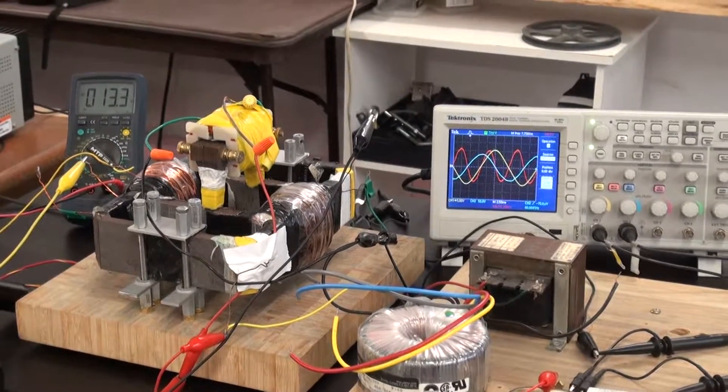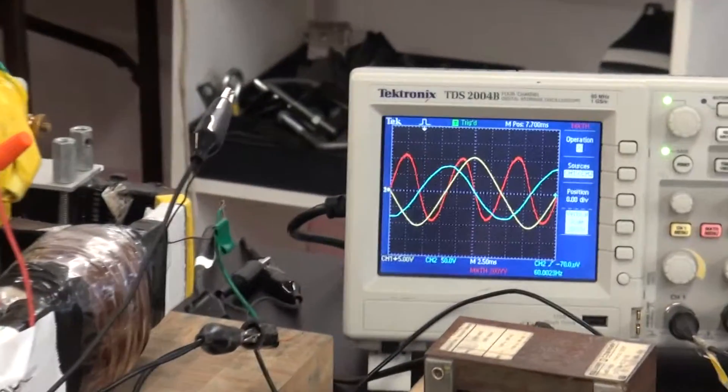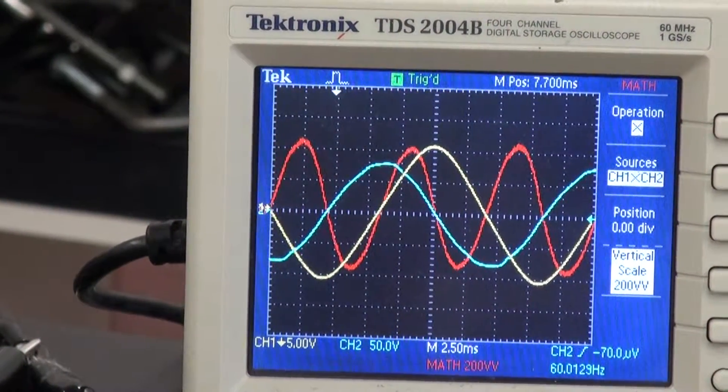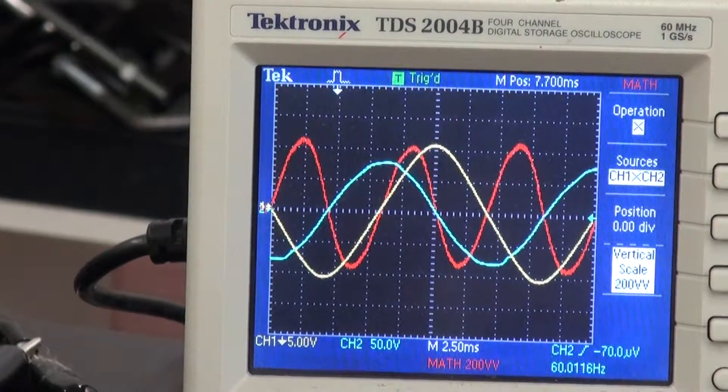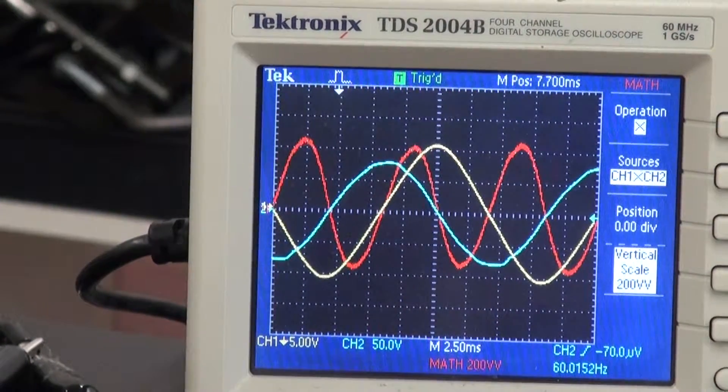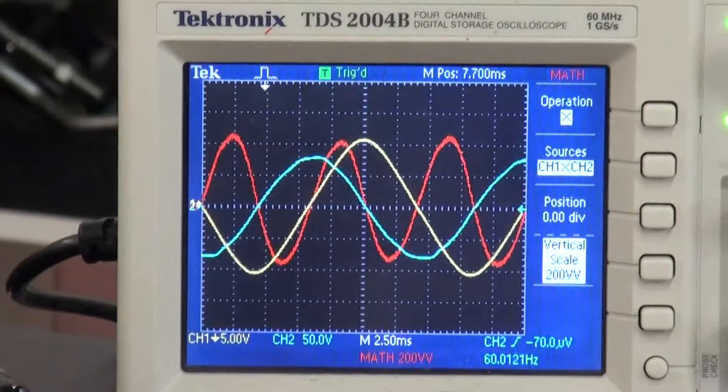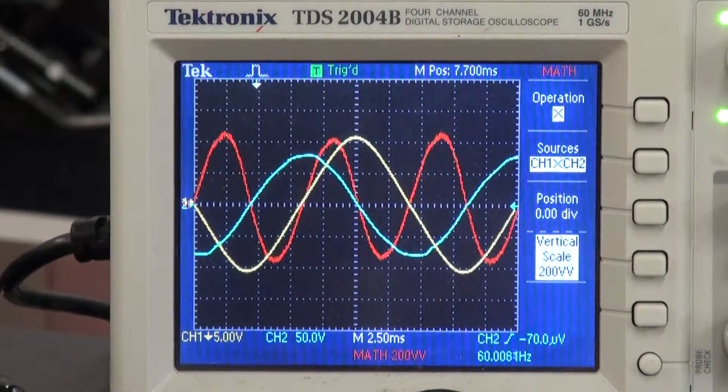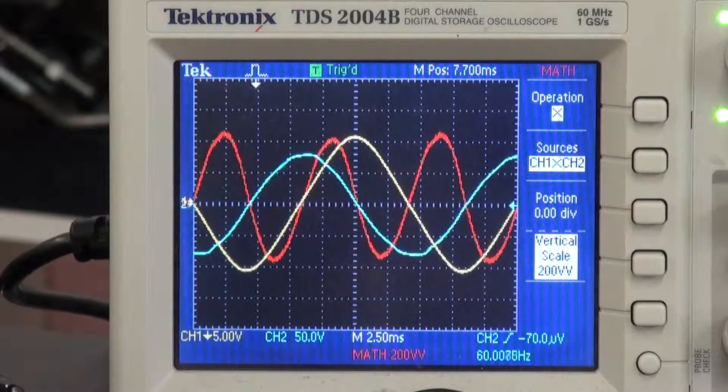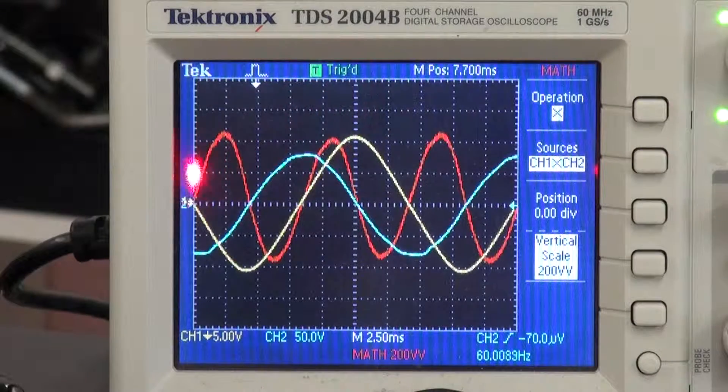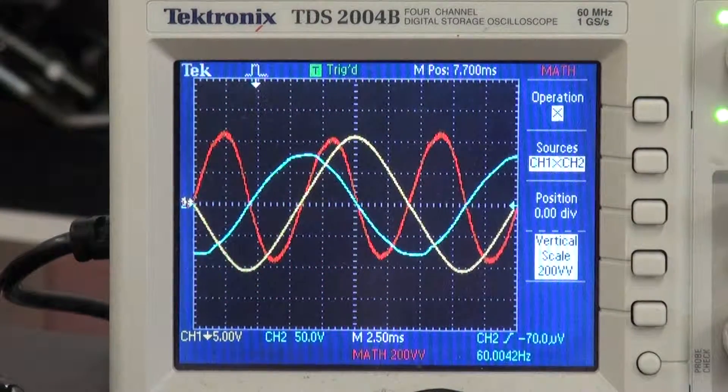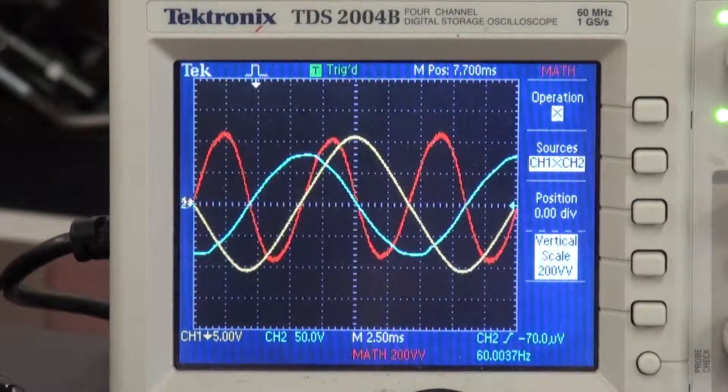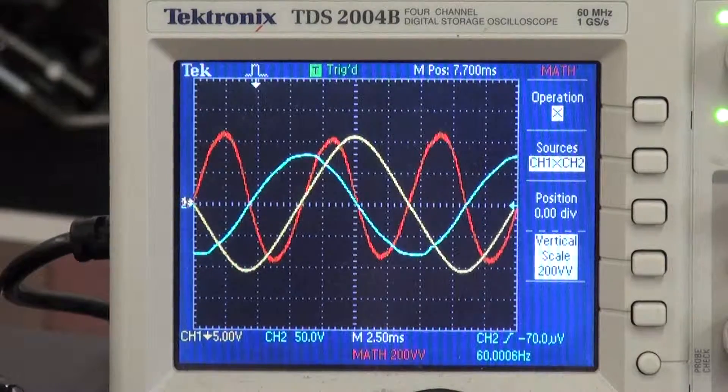And our power factor in our primary is about 0.15. And the voltage and current are not quite 90 degrees out of phase, but they are close. The current sine wave is yellow and the voltage sine wave is blue, and the power sine wave is red.